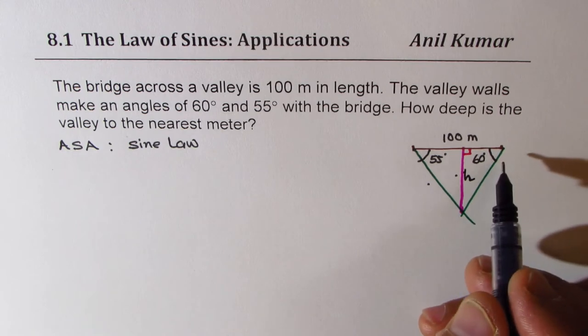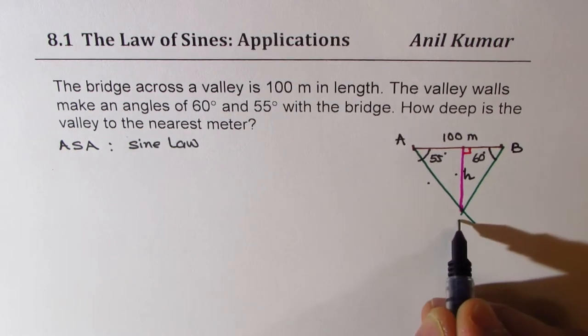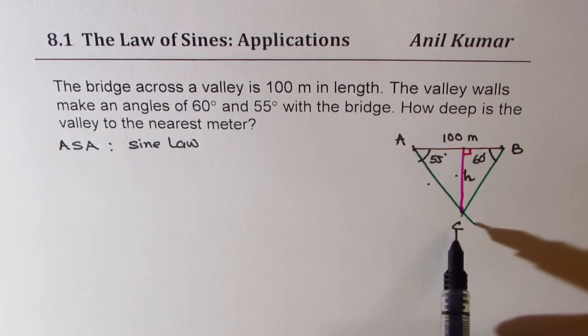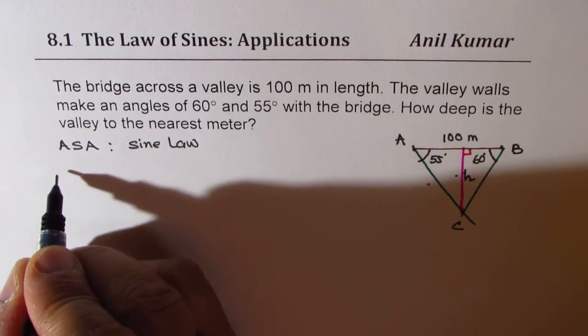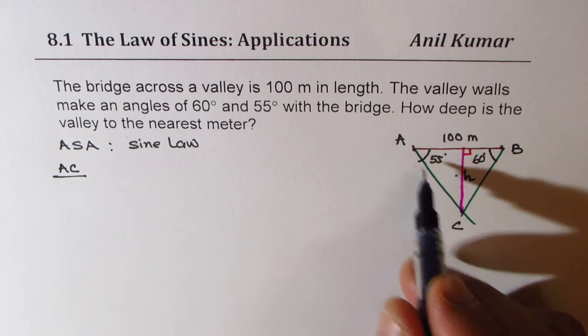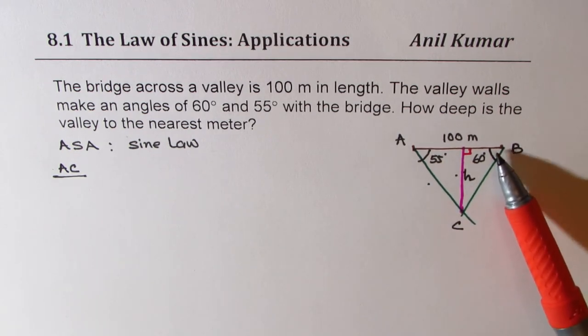So let's first do the bigger triangle. Let me say this is A, B, and C. And let's find side AC. So in sine law, I'll keep side AC on the top. The angle opposite to side AC is B, 60 degrees.